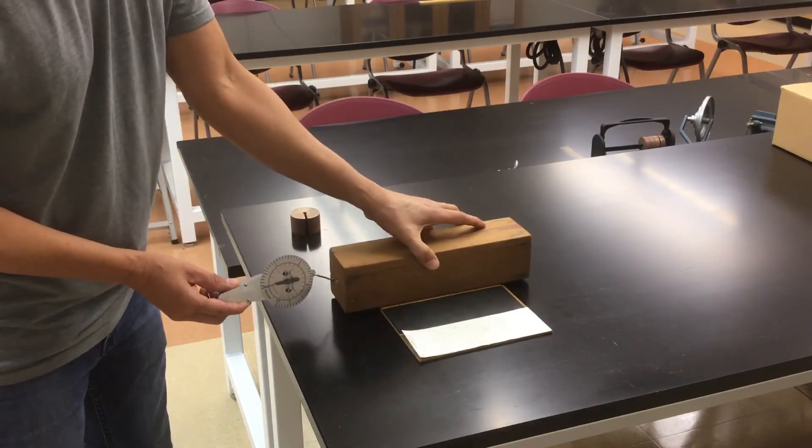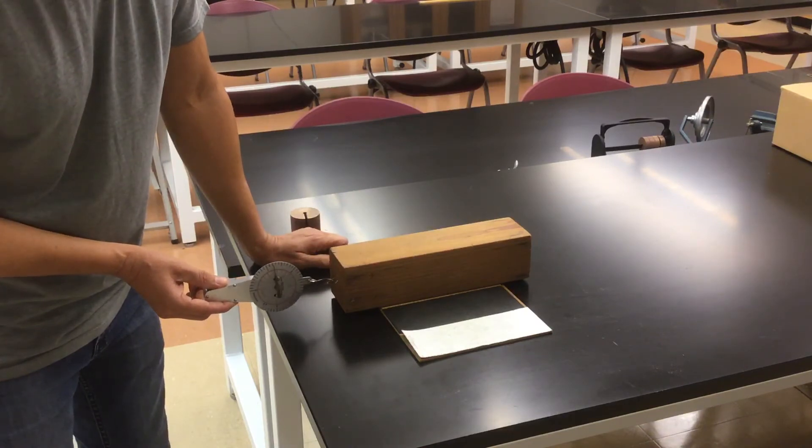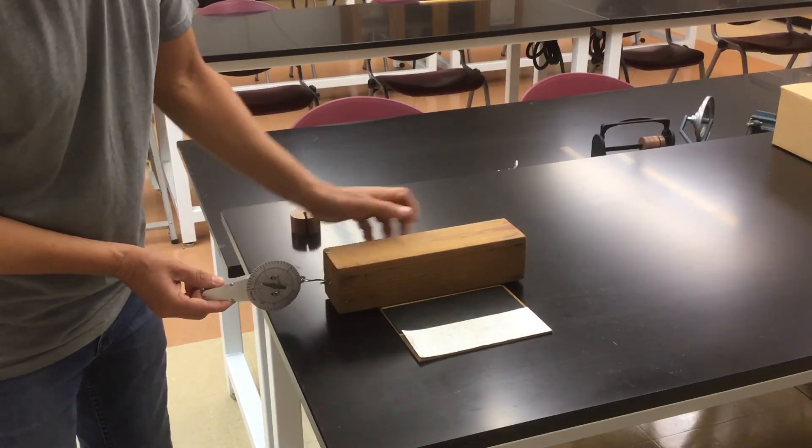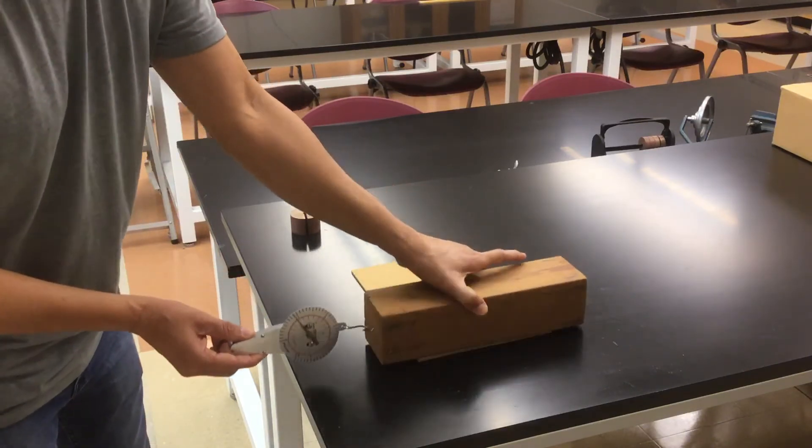Put it on the cork. Now the maximum force of friction goes just beyond two newtons. Put it on the grip tape.